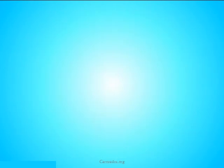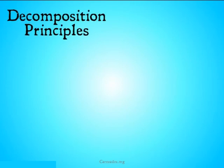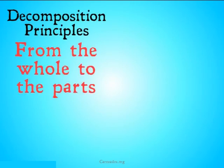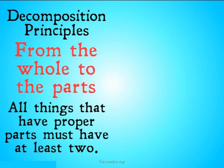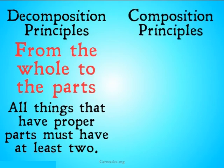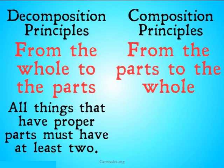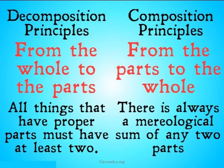Those were the basic, uncontroversial pieces of Mereology. However, there's a lot more to Mereology that we're not going to be able to get to in this video. They're going to be things like decomposition principles — principles that go from the whole to the parts, such as all things that have proper parts must have at least two — and composition principles that go from the parts to the whole, such as there's always a mereological sum of any two parts. This last point is going to be important when we take a look at the mereological-ontological argument for the existence of God, because it relies on a composition principle in order to get off the ground. So if you disagree with that composition principle, or your Mereology doesn't include it, you're not going to be convinced by that argument.